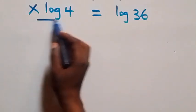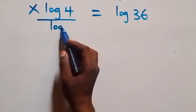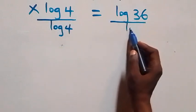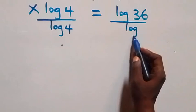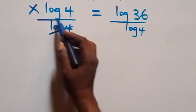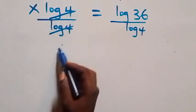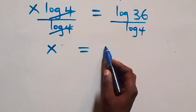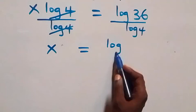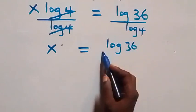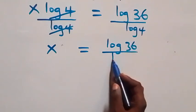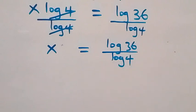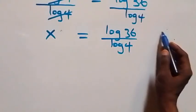Then from here we divide both sides by log 4. Log 4 cancels on the left side and we have x equals log 36 over log 4.